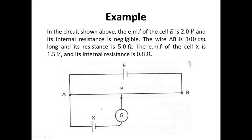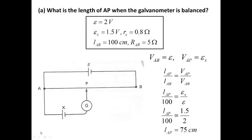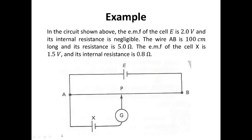The EMF of the cell X, so this EX, is 1.5V, and the internal resistance is 0.8 ohm. So the internal resistance of the lower battery is 0.8 ohm. We should draw the internal resistance RX below. This lower battery has internal resistance, but the big battery has no internal resistance.